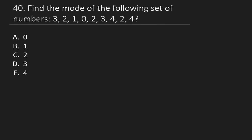Question 40: Find the mode of the following set of numbers. The mode is the value with the highest frequency. Counting: 3 appears twice, 4 appears twice, 2 appears three times. So the mode is 2. That completes all 40 questions. I hope you enjoyed this video — don't forget to share, like, and subscribe to the channel for more educational content.